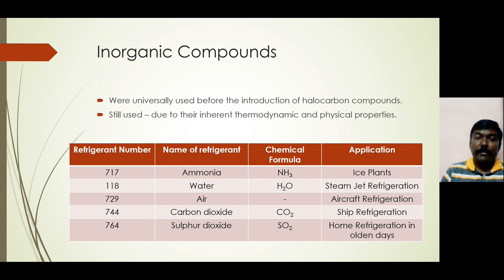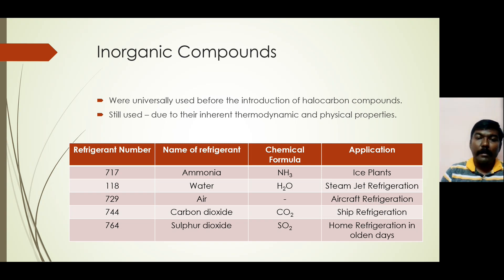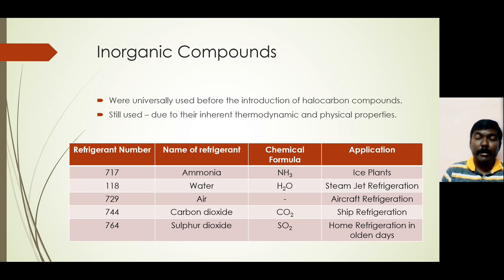Some examples of inorganic refrigerants: ammonia, which is R-718 — used in ice plants. Water is used in steam jet refrigeration. Air is primarily used in aircraft refrigeration systems, even in today's scenario. Carbon dioxide is used in ship refrigeration. Sulfur dioxide was used in home refrigeration in the olden days, but sulfur dioxide is not used nowadays.